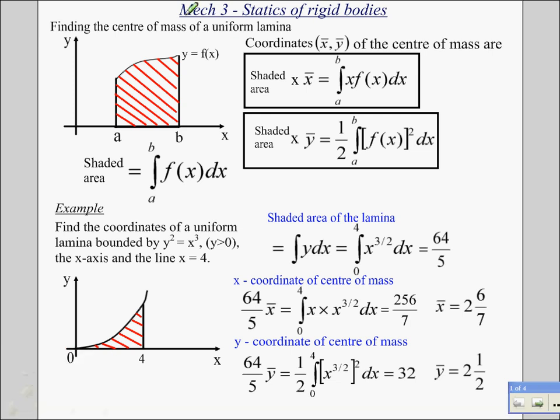Hi, this is the final video in the series of Mechanics 3 videos and this is the final chapter in the book on statics of rigid bodies. Here we have finding the center of mass of a uniform lamina. First thing we need to do is to find the area inside there, as expertly shaded by me. Shaded area is the integral between these limits of the function of that curve. You should know that from your pure maths. So find the shaded area first.